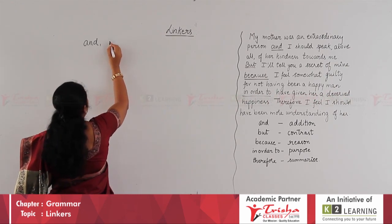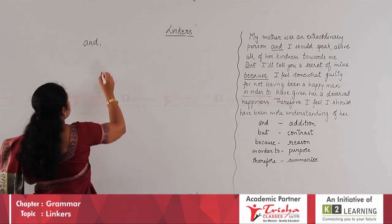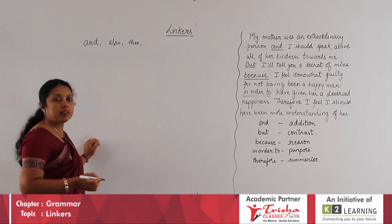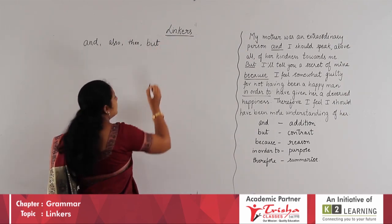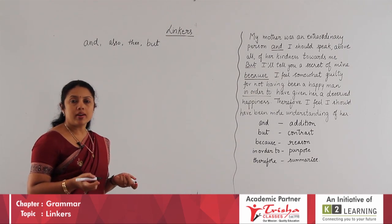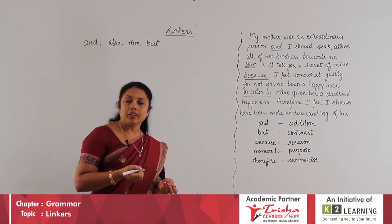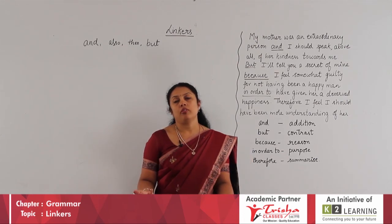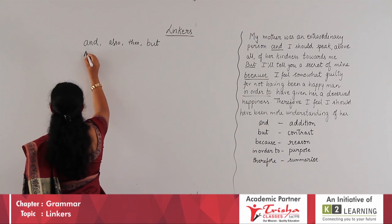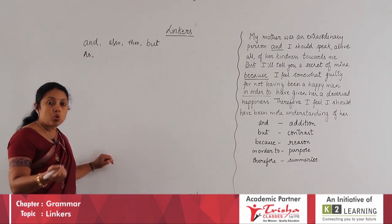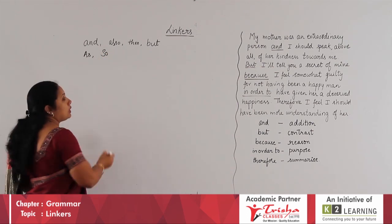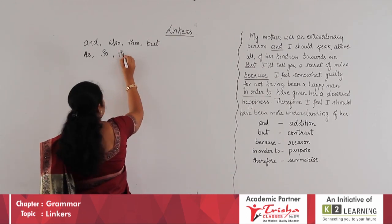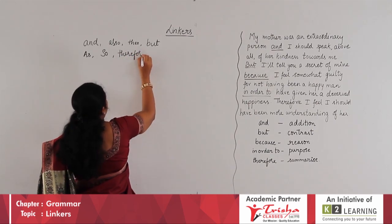Later on, we also learned that linkers like ALSO and THEN could be used. Gradually we learned BUT as a linker and as a conjunction. When we started writing letters giving reasons — 'as I was not feeling well' — AS is also a linker. 'I am not keeping well, SO I could not finish my homework.' SO is a linker. 'I request you to give me leave, THEREFORE' — THEREFORE is also a linker or conjunction.